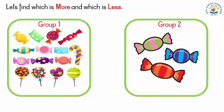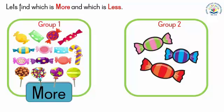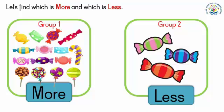Let's find which is more and which is less. Students, you can see two groups with candies — group one and group two. Can you find which group has more candies and which group has less candies? Yes, group one has more candies and group two has less candies.